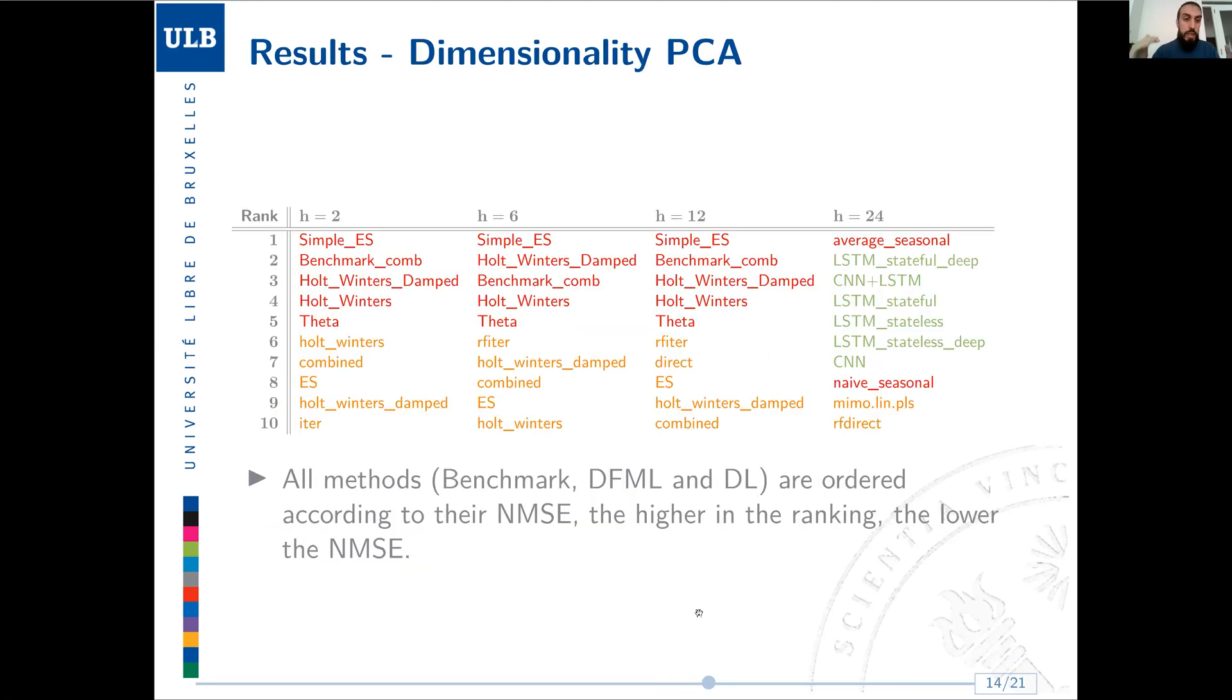Here you can see the rank of the models. On top, we have the model with the lowest normalized mean squared error. On the bottom, the one with the highest normalized mean squared error. We can see that if we employ PCA as dimensionality reduction in the extended DFML, the result we obtain is that actually for most of the horizons, basically all the horizons, univariate simple techniques are actually doing better than a complex multivariate model. In some cases, simple exponential smoothing, in some else it's an average seasonal. With the exception here for H equal to 24, in which some deep learning techniques start to kick in and to get better performances.